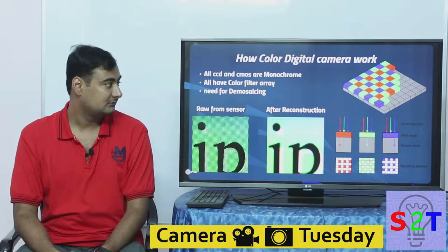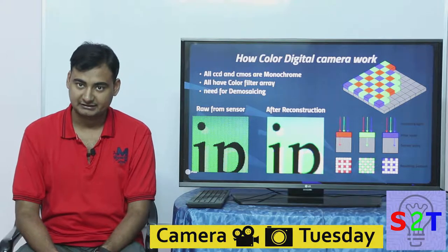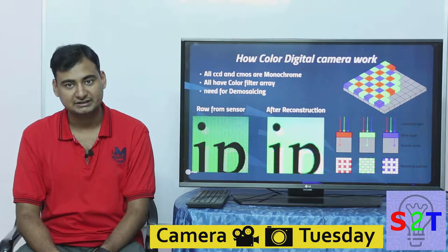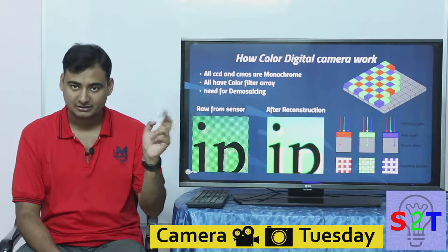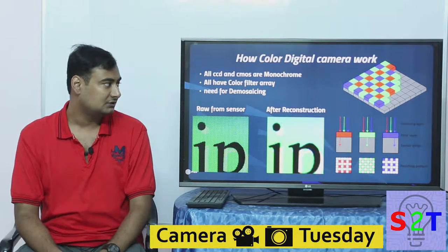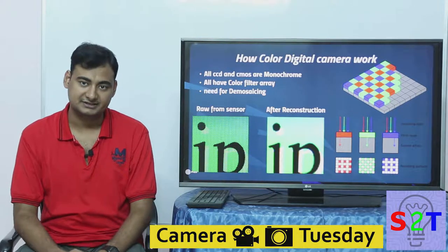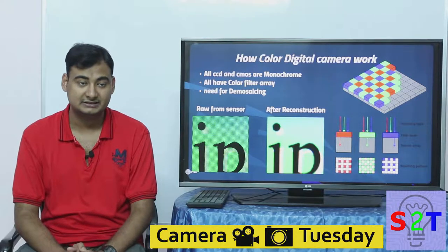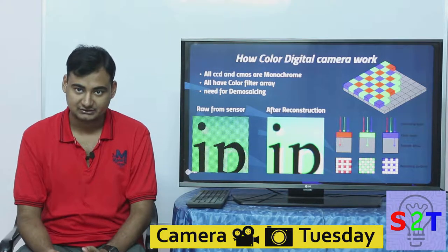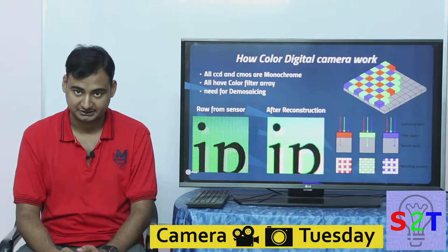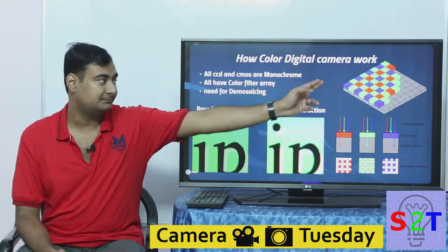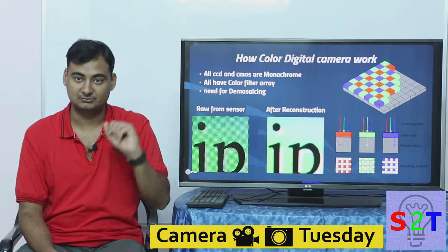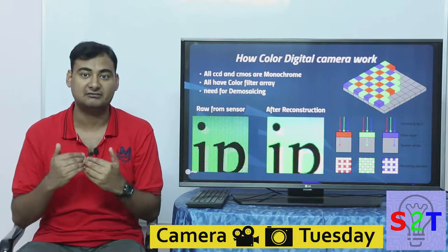The normal color cameras we see in everyday digital life are generally either a CCD or a CMOS sensor. Here's the deal: both CCD and CMOS are inherently black and white. All they do is tell you the brightness of an area on the sensor. So for each pixel, it tells you how bright that pixel is — it does not have color information.